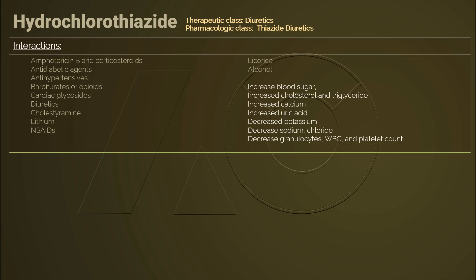Hydrochlorothiazide can affect the following laboratory results: increased blood sugar, increased cholesterol and triglycerides, increased calcium, increased uric acid, decreased potassium, decreased sodium, decreased chloride, decreased granulocytes, and decreased white blood cell and platelet count.